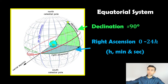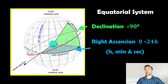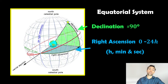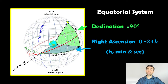Declination is like the altitude or the latitude. If you think about latitude and longitude on our planet, the declination is essentially like the latitude — plus or minus 90 degrees. And then we also have the right ascension, which is kind of like the longitude, but done on the celestial sphere as opposed to the actual planet itself.